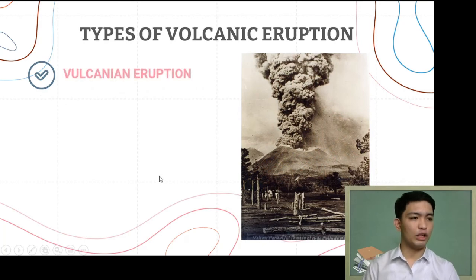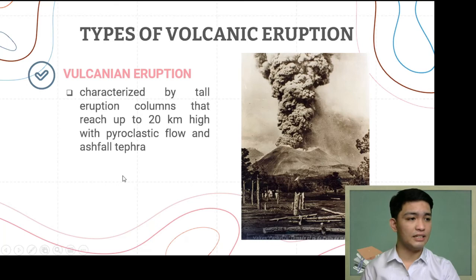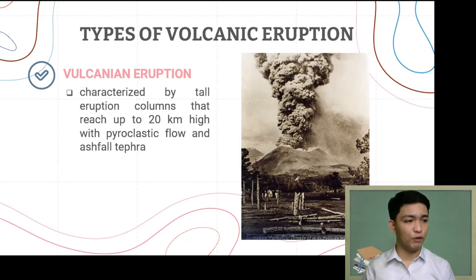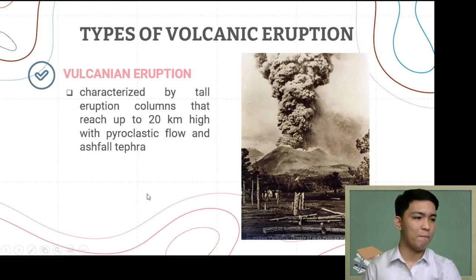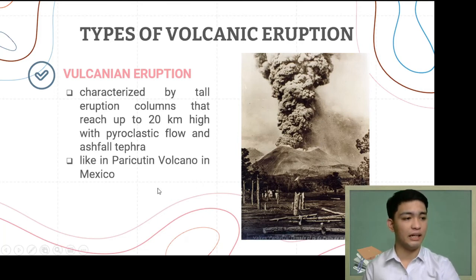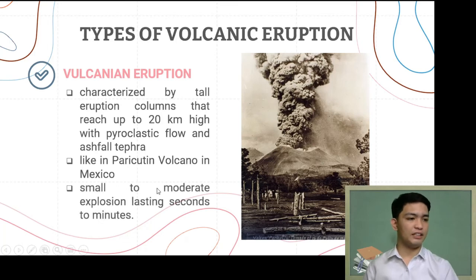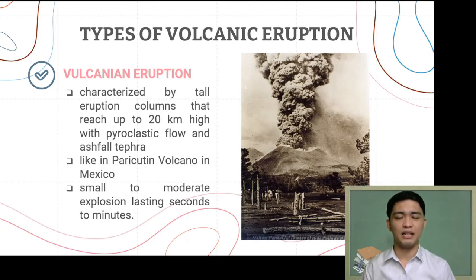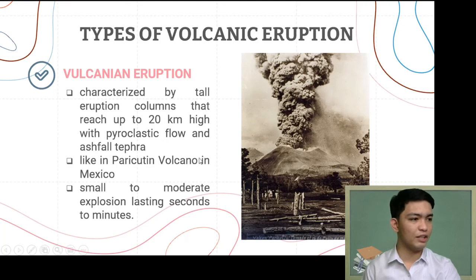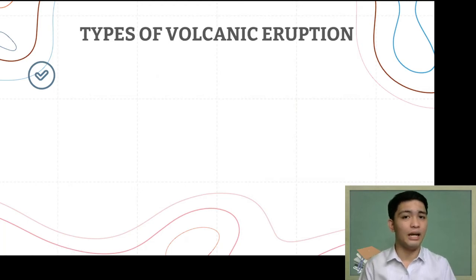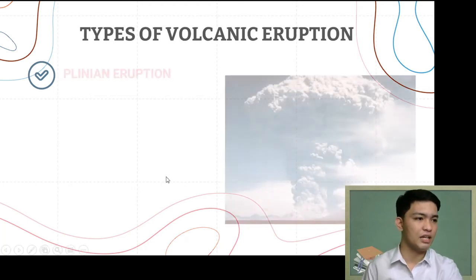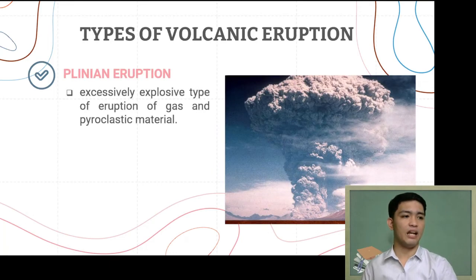The fourth type is vulcanian eruption, characterized by tall eruption columns that reach up to 20 kilometers high, with pyroclastic flow and tephra. This is a small to moderate explosion lasting seconds to minutes. An example is the eruption of Parícutin Volcano in Mexico. If the eruption is even more explosive, with columns exceeding 20 to 35 kilometers, that is already considered a Plinian eruption — an excessively explosive type with a high rate of magma discharge sustained for minutes to hours and widespread dispersion of ash.